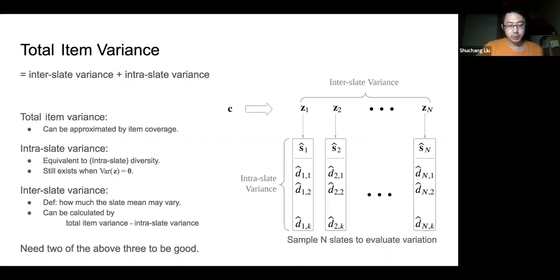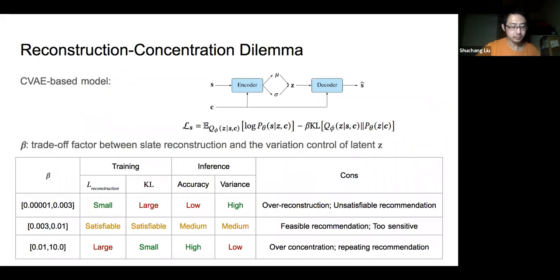In our experiment, we regard intra-list variance as identical to the intra-slate diversity, and we regard item coverage as the approximation of the total item variance. Now we can observe how generative models behave in terms of slate recommendation.